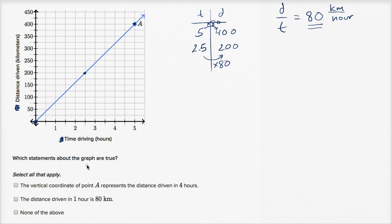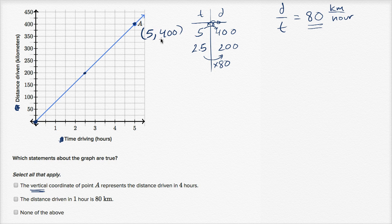Which statements about the graph are true? Select all that apply. The first statement: the vertical coordinate of point A represents the distance driven in four hours. Point A is at coordinate (5, 400). The vertical coordinate — the second coordinate — tells us how far to move in the vertical direction. So 400 represents the distance driven. The vertical coordinate of point A represents the distance driven: we've driven 400 kilometers. I'll check that one.